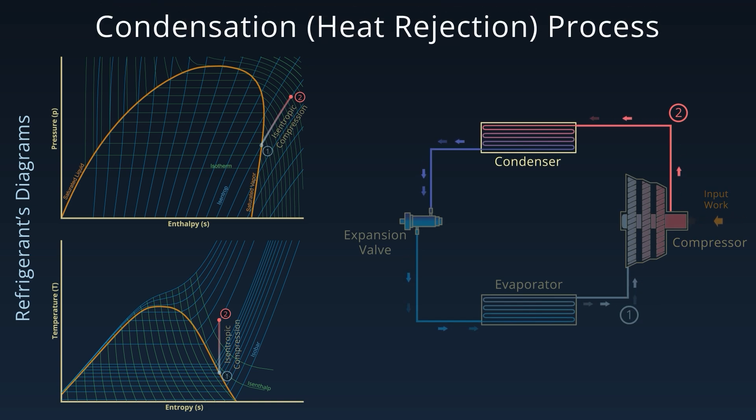Next, condensation. From 2 to 3, the refrigerant enters the condenser, where it releases heat to the surroundings, often ambient air or cooling water. It undergoes isobaric heat rejection, condensing from vapor to liquid. By point 3, we have a high pressure saturated liquid.